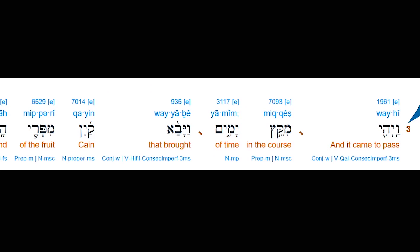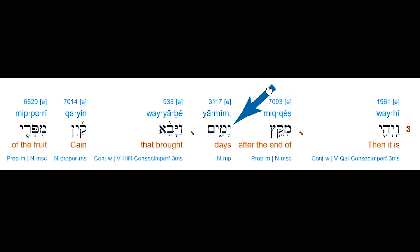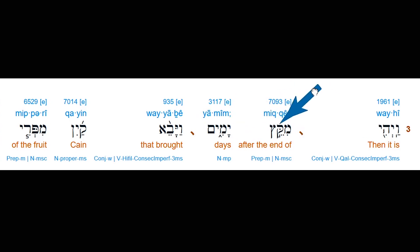We see in Genesis 4:3 another mistranslation: 'And it came to pass in the course of time' is a very ambiguous, watered-down translation. Let's fix it: 'Then it is after the end of days' — meaning after the end of the days of the year, or after the year had renewed itself. Then they brought their offerings. So again, 'days' is being used for a year, and we see that it has an end point. The end point is the word katsah or kats — the end of, meaning the cardinal points, east and west.